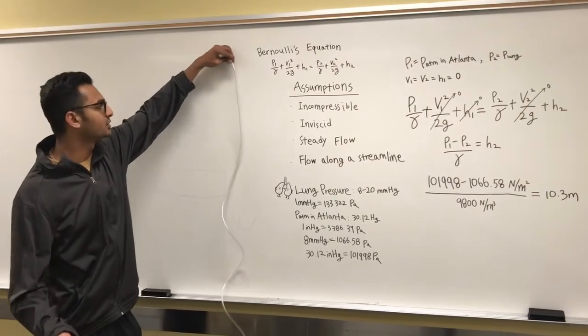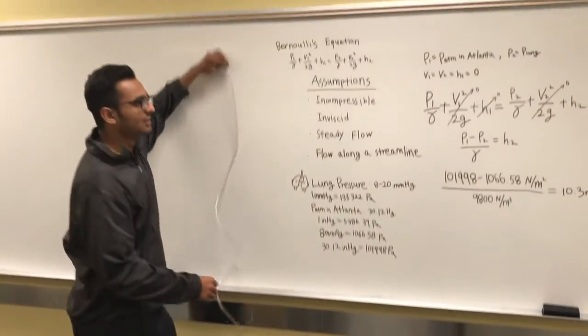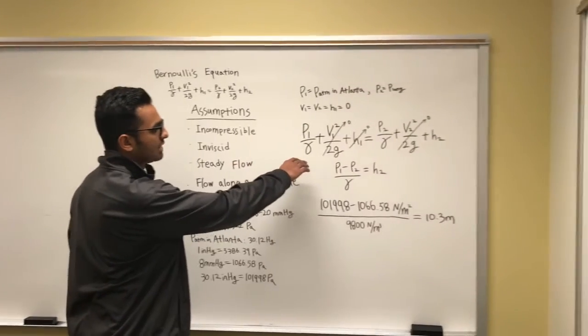So here we have our straw with 0.1 being the water source and 0.2 being where you're going to be sucking. So we use the following equation right here.